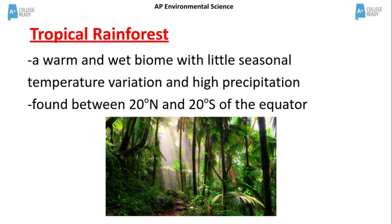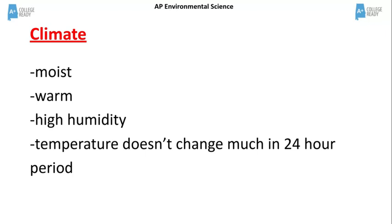The tropical rainforest is a warm and wet biome with little seasonal variation and high precipitation. This biome is located between 20 degrees north and 20 degrees south latitude. The climate in the tropical rainforest is moist and warm with high humidity. The temperature remains relatively constant within a 24-hour period.